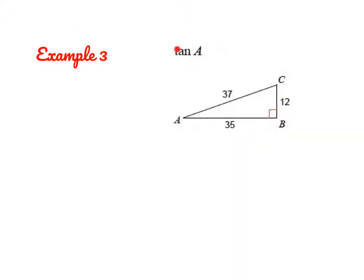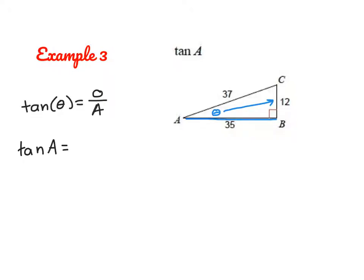Let's find the tangent of angle A. Tangent of theta is always opposite over adjacent — that's the TOA of SOHCAHTOA. Starting at angle A and looking across, 12 is the opposite leg. Even though 37 is touching my angle, it is actually the hypotenuse, which means the adjacent leg is AB with a length of 35. So the tangent of angle A is 12 over 35.